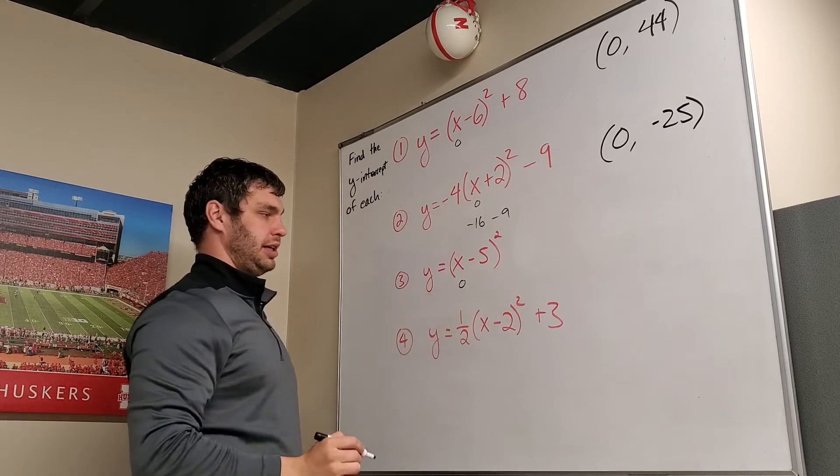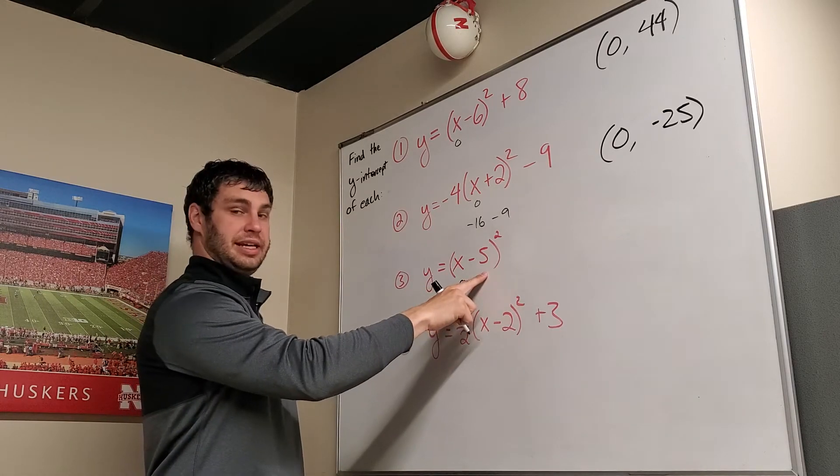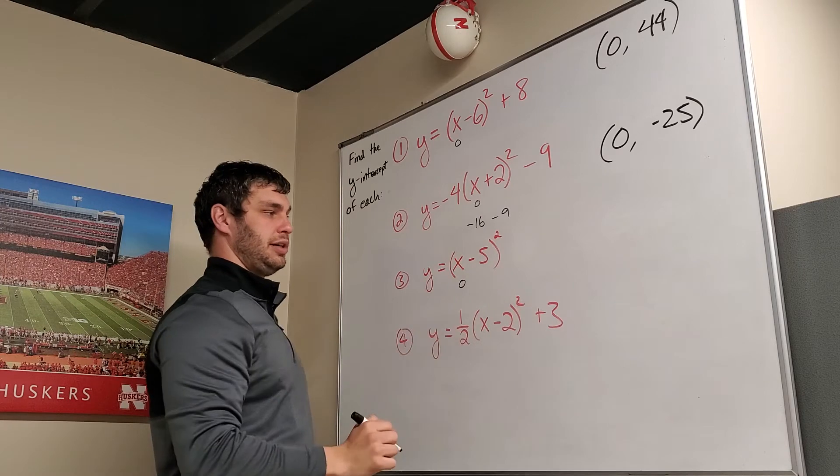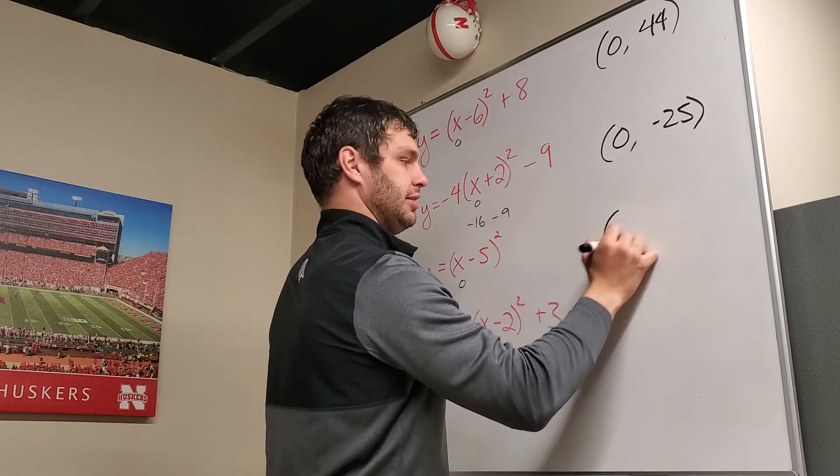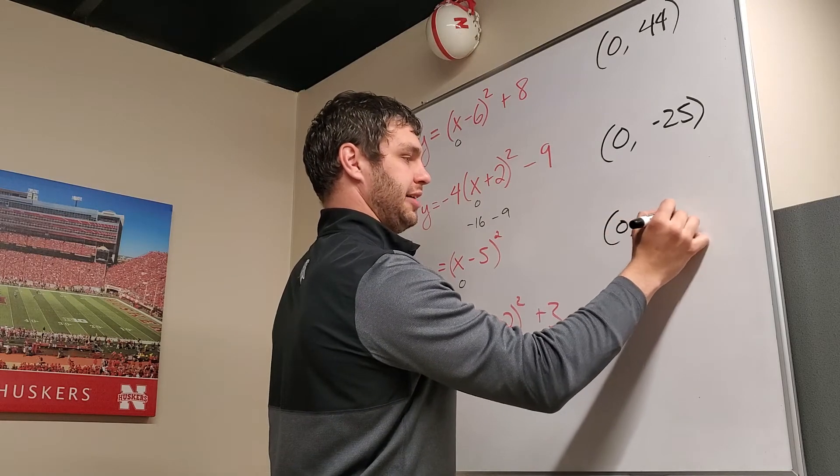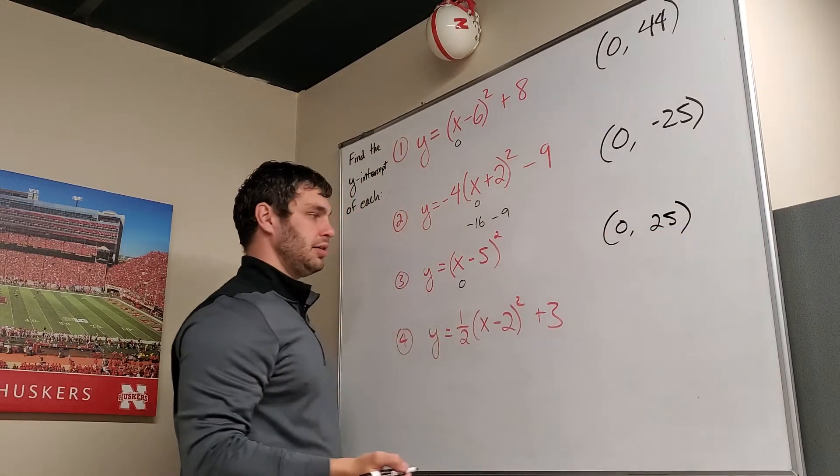On this one, plug in 0 for x. 0 minus 5 is negative 5. Negative 5 squared is 25. And that's all that is there. So again, 0 for the x, 25, positive 25 this time for the y.